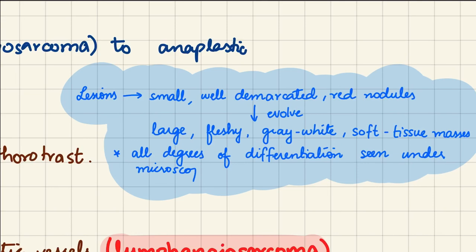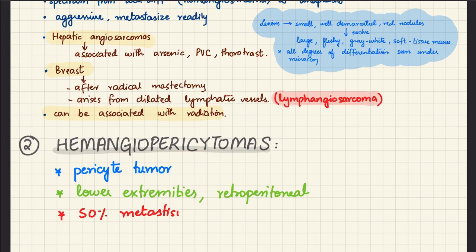Early angiosarcoma lesions are small, well-demarcated red nodules that evolve into large fleshy grayish-white soft tissue masses with all degrees of differentiation seen microscopically. Hemangiopericytomas are tumors of pericytes — cells of the microcirculation that wrap around endothelial cells lining capillaries and venules, controlling blood flow, phagocytosis of cellular debris, and blood-brain barrier permeability. They are usually seen in the lower extremities and retroperitoneally, and 50% metastasize.